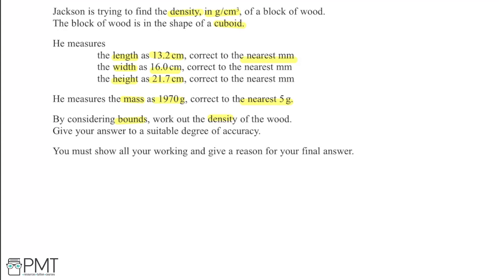When we see the phrase 'correct to the nearest', we know we'll be working with bounds — upper and lower bounds for density, using upper and lower bounds of mass and volume. The units for density are grams per centimetre cubed, which is mass divided by volume. The measurements are already in centimetres and grams, so no unit conversions are needed.